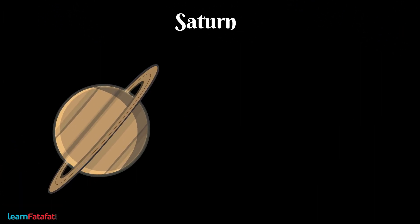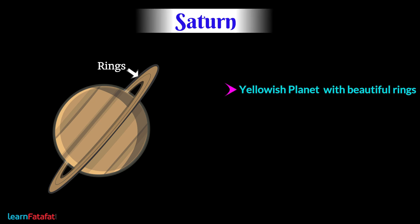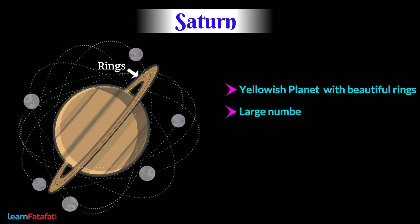Saturn. The yellowish planet of the solar system with beautiful rings is Saturn. It also has a large number of satellites. It is the least dense planet in the solar system. Its density is lower than water.